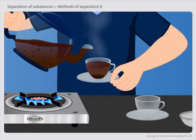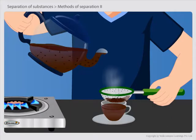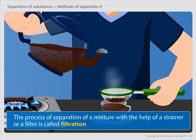Then how do we separate all the tea leaves from the tea? Now take a strainer and pour the tea through it.